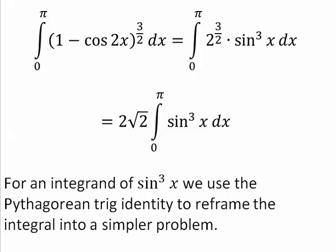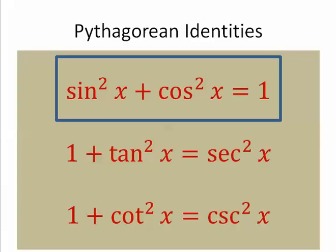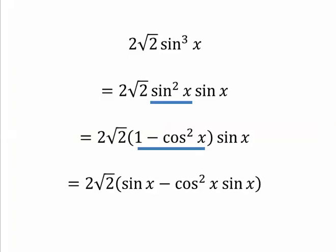For an integrand of sine to the 3 x, we use the Pythagorean trig identity to reframe the integral into a simpler problem. So there's our Pythagorean identity that we're going to use. Let's look at the expression. Instead of sine to the 3, I'll have sine squared sine, and instead of sine squared, I'll have 1 minus cosine squared, and then distribute that sine x into the parentheses.